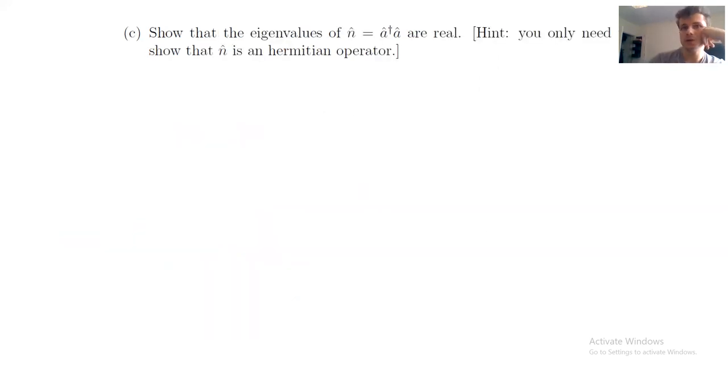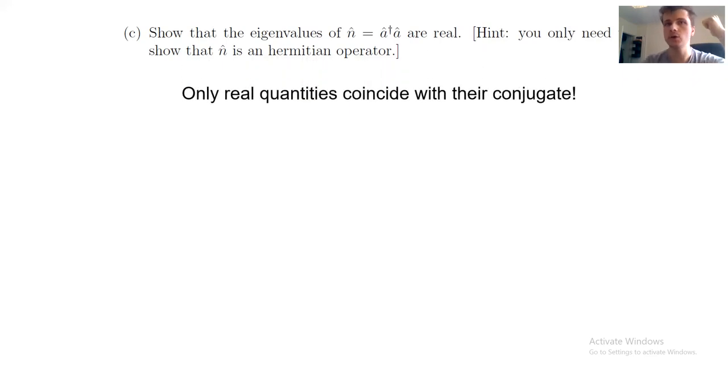Finally, we are asked to prove that the number operator gives real eigenvalues. And again, this is rather trivial if you remember two things. First, only Hermitian operators give real quantities because, well, only real numbers coincide with themselves.